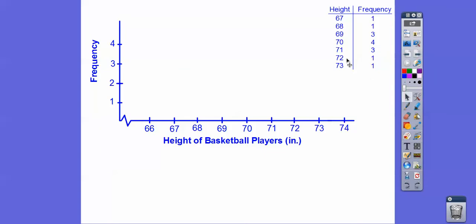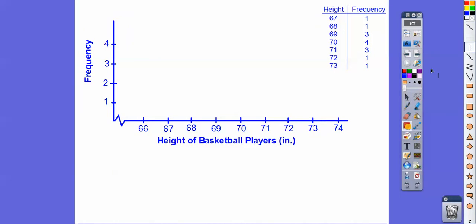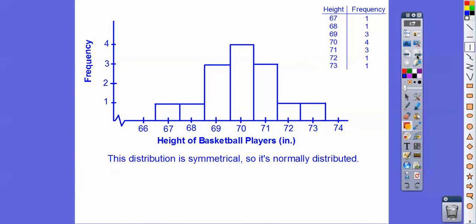All right, so here's my frequency table right there. We're just going to make bars that go up from 67. I'll go halfway here and go up one, then the next one's going to go up one also. This next one's going to go up three, and then the next one's going to go up to four. So what's the shape of that graph? Well, that's pretty symmetrical, so it's normally distributed right there.